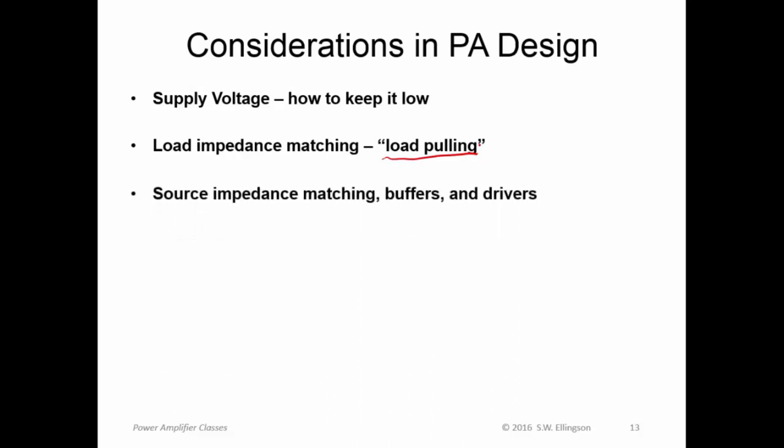The idea of source impedance matching buffers and drivers. Key point here is that power amplifiers deliver power. And they're not really gain devices. So people rarely talk about the gain of a power amplifier. The whole idea is figuring out how to get something to control the transistor and then letting that transistor deliver the power to the load. So this creates a whole new set of problems with input impedance matching and involves auxiliary devices at the input known as buffers and drivers, which are intended to condition the input in a way that optimizes that control of the transistor.